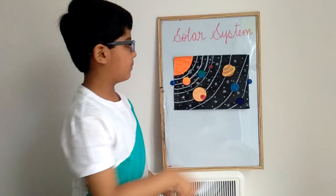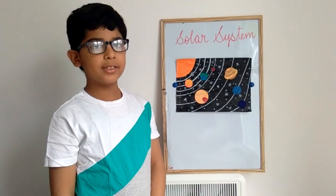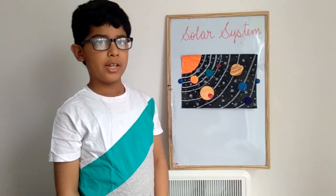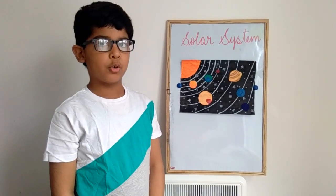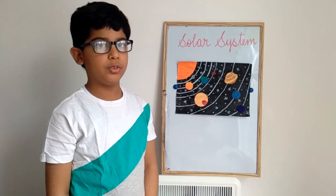The next planet is Mars. Mars is called the red planet. It is made of ice, rocks, and soil. It has two moons.